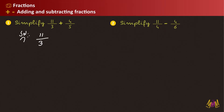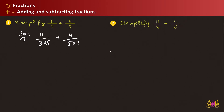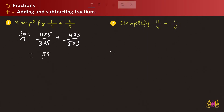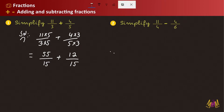We have 11 divided by 3. We multiply 3 by 5 to get 15. We also multiply 4 by 3. So we have 11 multiplied by 5, which gives 55, divided by 15, plus 4 multiplied by 3, which gives 12, divided by 5 multiplied by 3, which is 15. The denominator is now the same: 15.